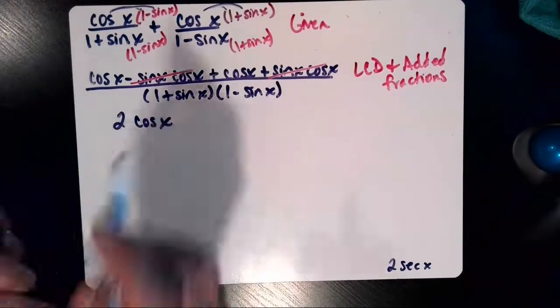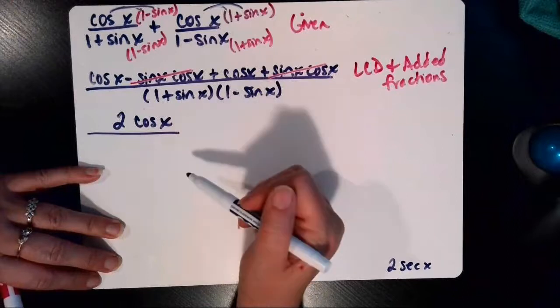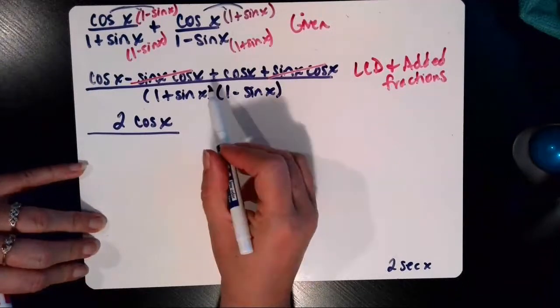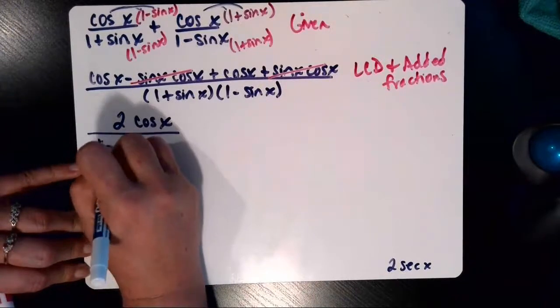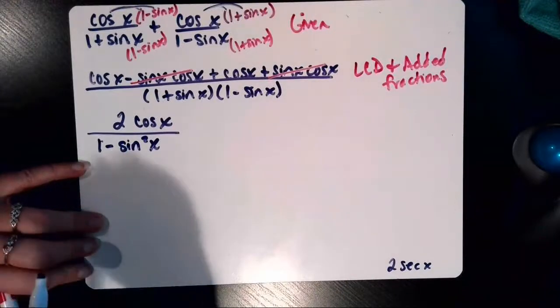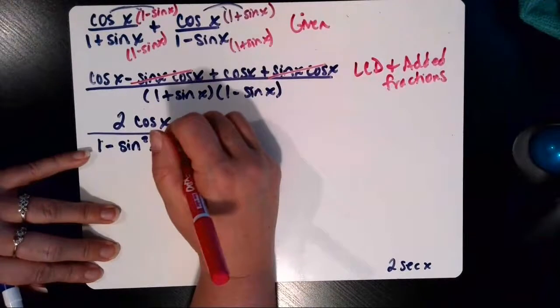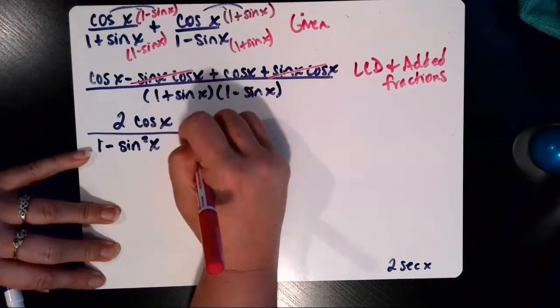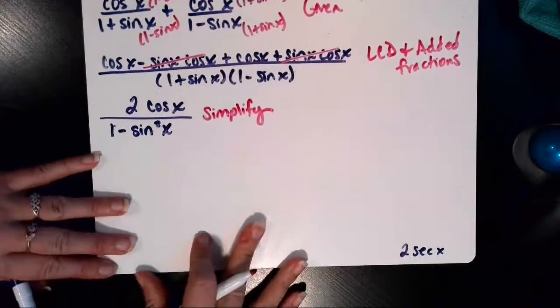And our denominator is a difference of two perfect squares. So when I multiply those two binomials together, I'm going to have 1 minus sine squared x for that difference of squares. And my reason for step number three was simplify completely.